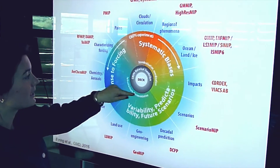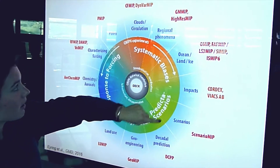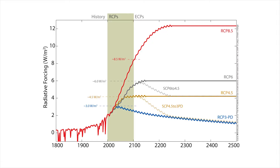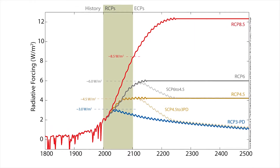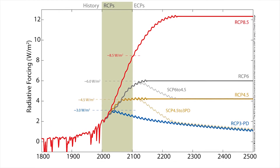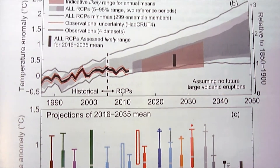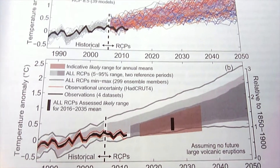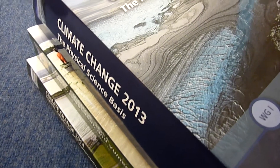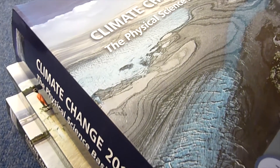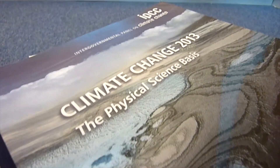CMIP also sets standards and specifies experimental protocols. By following these and by using the same climate change scenarios, the climate outputs can be analyzed collectively, resulting in better climate projections. The CMIP models are also key to international climate assessments and negotiations such as, for example, the IPCC assessment reports.